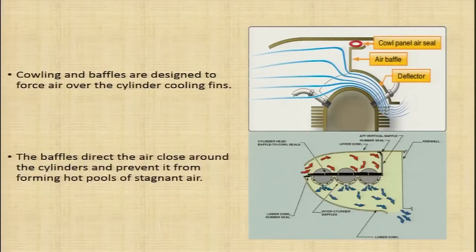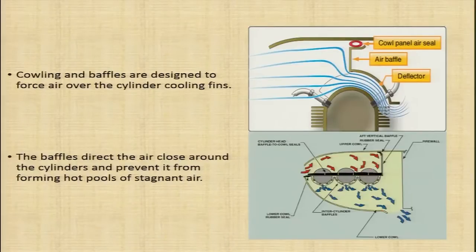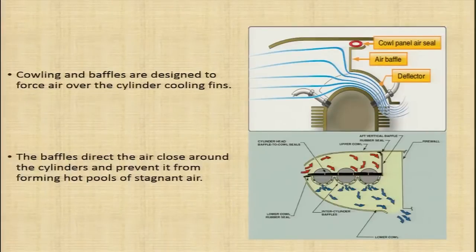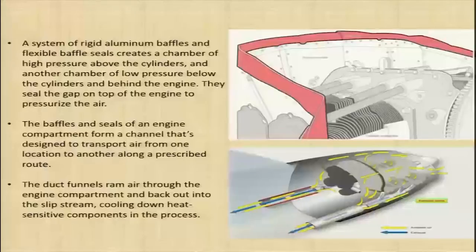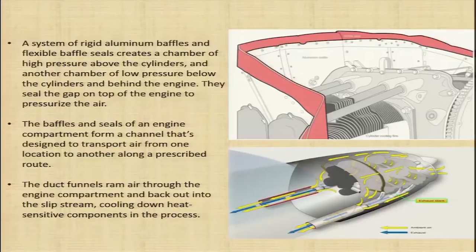The baffles direct the air close around the cylinders and prevent it from forming hot pools of stagnant air. The baffles are rigid aluminum sheet metal, and on top of them are the flexible baffle seals — a system of rigid aluminum baffles and flexible baffle seals that create a chamber of high pressure above the cylinders and low pressure below the cylinders and behind the engine.